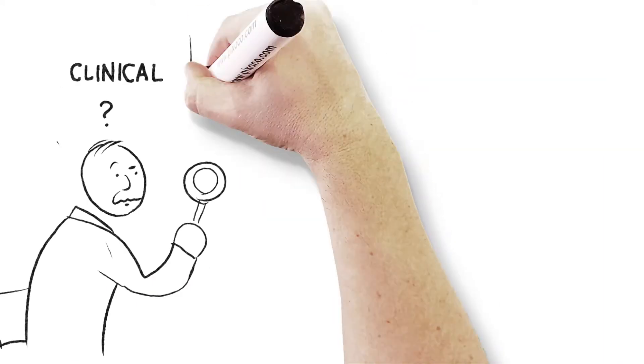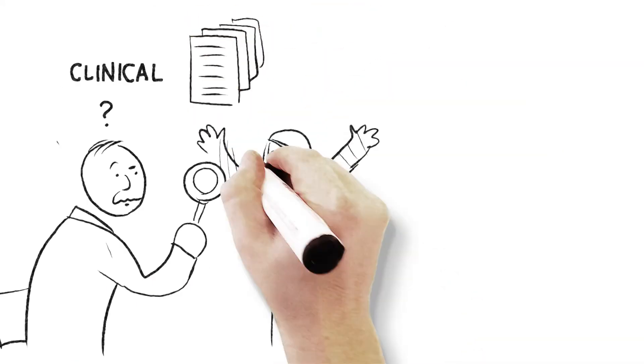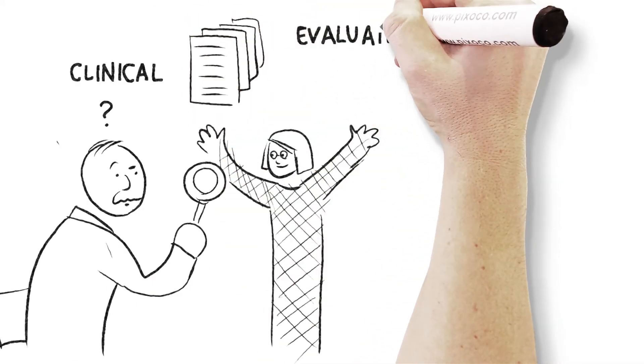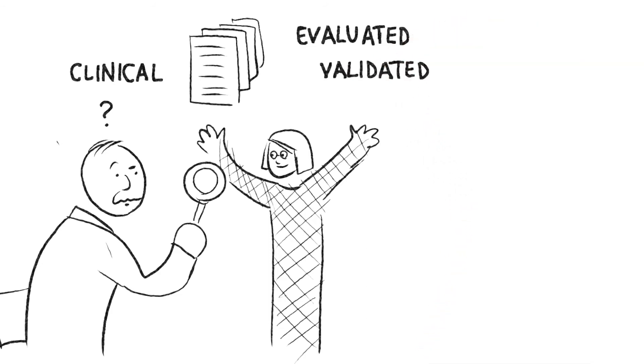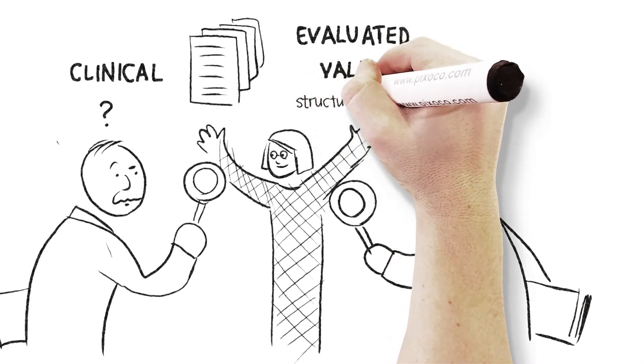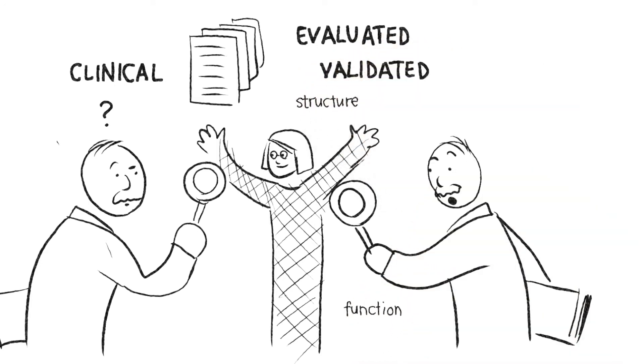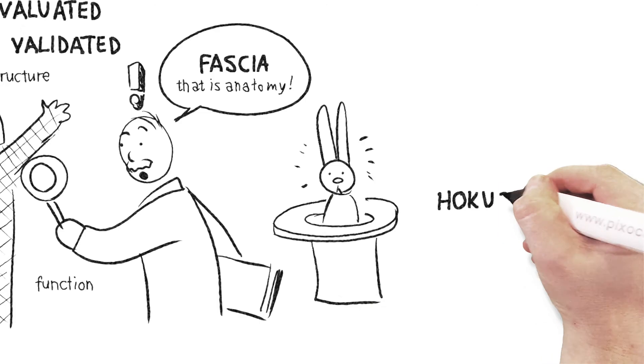So this is the clinical part of it which has to be evaluated and validated so that you can see that the treatment is working. Because the structure and function and the architecture of the fascia, that's anatomy. That's pure anatomy. And there's no hocus-pocus about that.